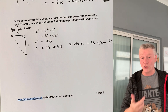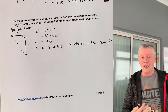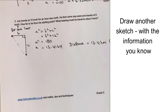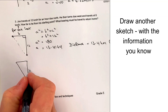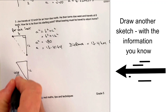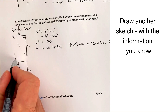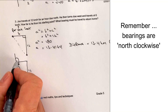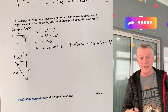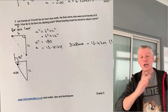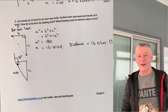The second part is a little bit trickier — it's a SOHCAHTOA-type question. It's the same triangle, but now we need to find the bearing. I know 12 is the opposite side and the hypotenuse is the longest side. The angle we're looking for determines the bearing. We know 90 degrees of it, but we need to add the extra angle. Since we know the opposite (12) and the adjacent (6), we use the tan relationship: tan equals opposite divided by adjacent.